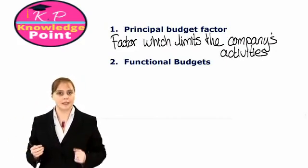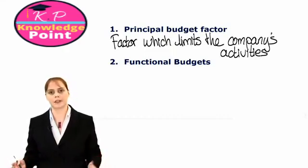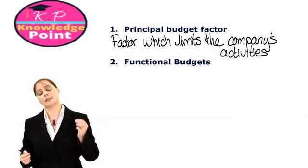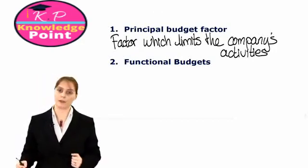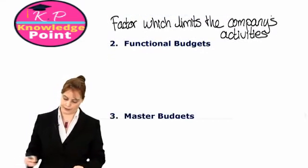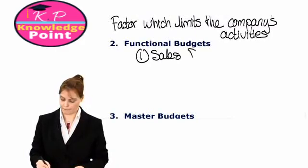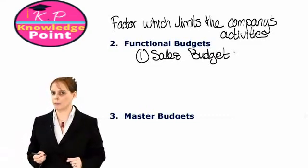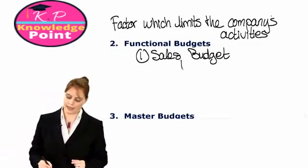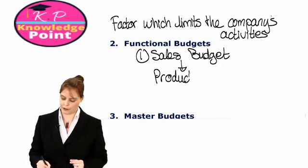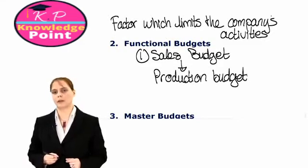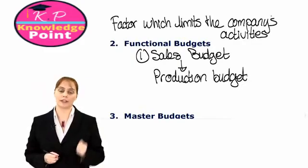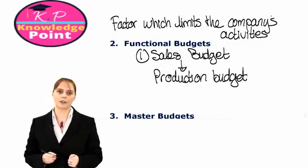Generally speaking, companies will produce and sell as many units of their product as there are customers prepared to buy. For that reason, we would usually start with preparing our sales budget, which will be the first functional budget we look at. Once we have prepared our sales budget and know how many units we're planning to sell in the coming year, we can then prepare our production budget — which must come after the sales budget because we need to know how many units we'll sell before working out how many we need to produce.